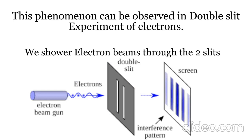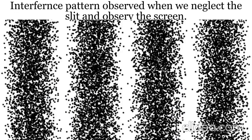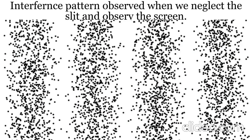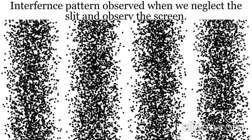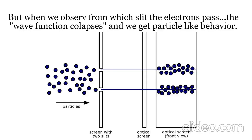This can be observed in an interference of electron experiment. Electrons are showered over the two slits of a double slit experiment, and we observe the screen. We observe an interference pattern. But when we observe the slits and determine from which slit the electron is crossing, it shows two discrete bands creating particle behavior. So the state of the electron is determined by our observations.